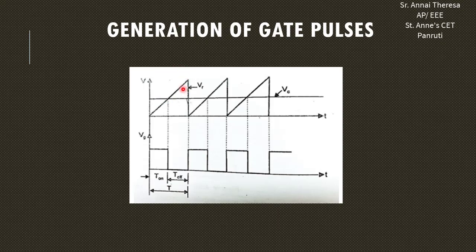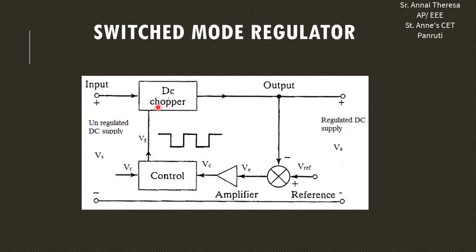In the control circuit, we are comparing the reference voltage with the amplified voltage. The amplified DC voltage and the sawtooth waveform are both compared, and the gate pulses are generated. These gate pulses are given to the DC chopper, and because of this controlled gate signal, we get the controlled output DC voltage.